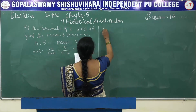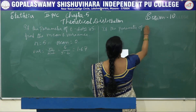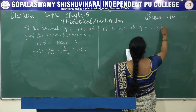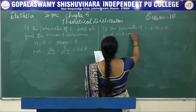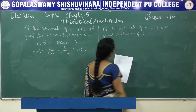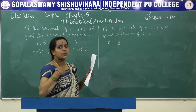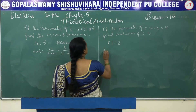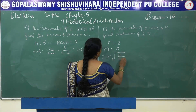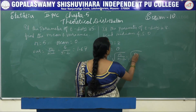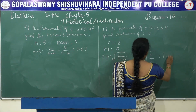Problem 2: If the parameter of T distribution is 8, find the median and standard deviation. Given n = 8: In T distribution, mean = median = mode = 0, so median = 0. Standard deviation = √(n/(n − 2)) = √(8/6) = √(8/6) ≈ 1.155.